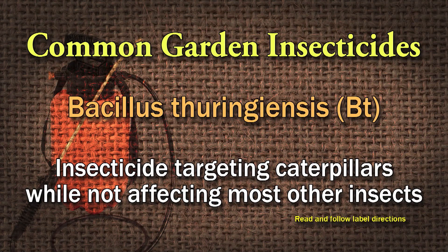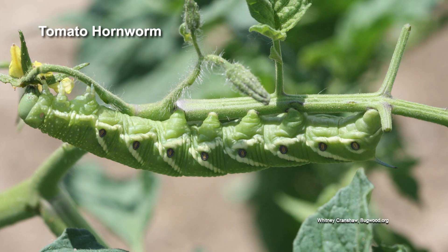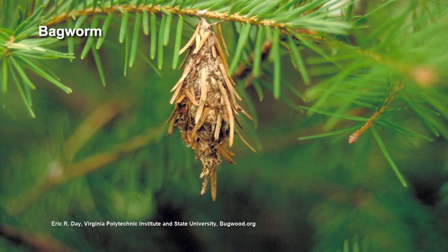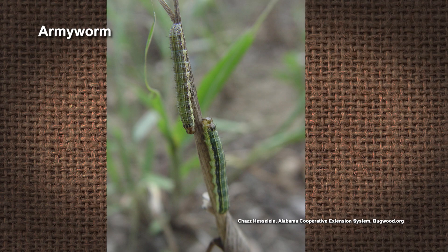Now let's talk about common insecticides. I like to go with as gentle a product as I can — easiest on the environment first. That means the biologicals. The most common biological insecticide is BT, Bacillus thuringiensis. It's been around a long time and works mostly on caterpillars: tomato hornworm, tomato fruitworm, tobacco hornworm, cabbage loopers, many vegetable insects, bagworms on ornamentals, and armyworms. Most caterpillars are controlled by BT.